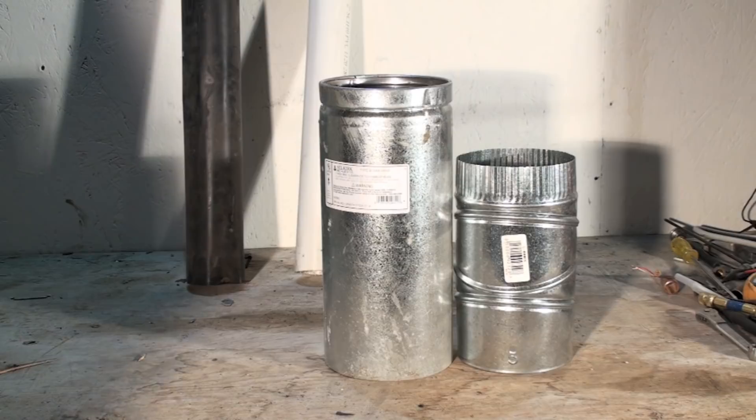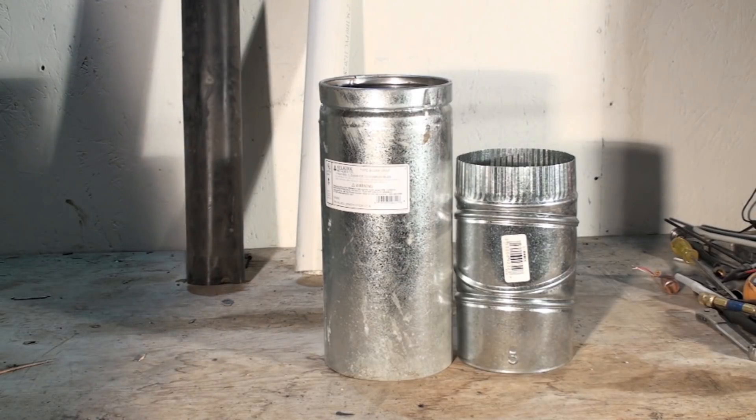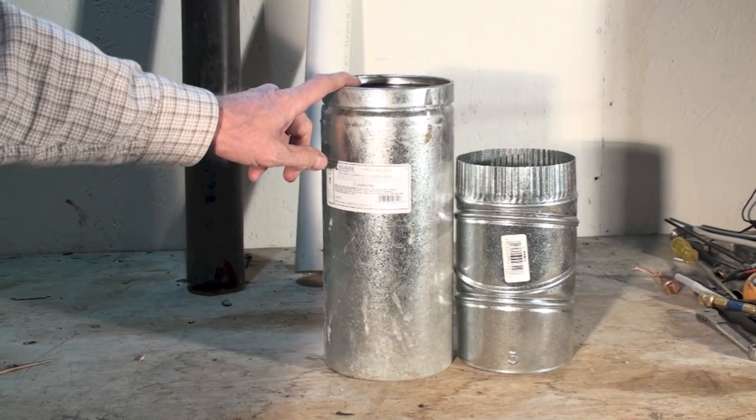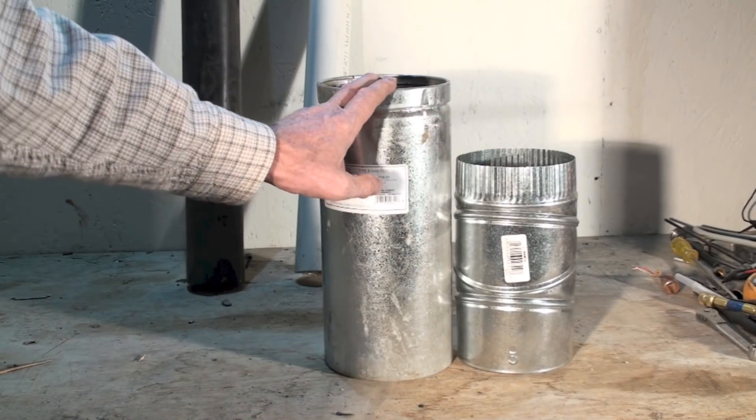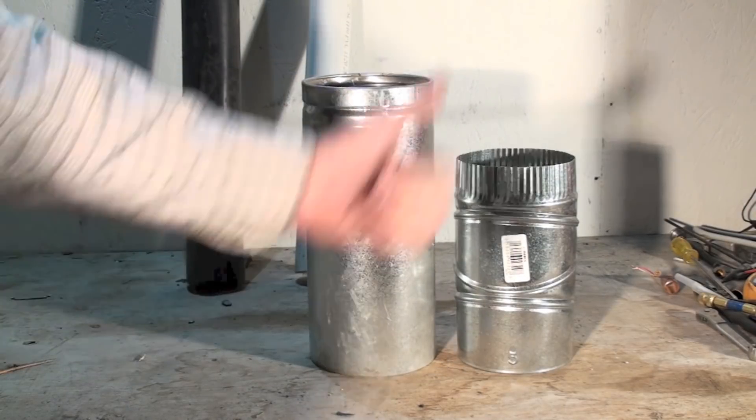When we started getting high efficiency furnaces, we changed from what we used to call the 80% furnace, which was kind of a steady state rating. That was the steady state supposed efficiency. We started going over to higher efficiency furnaces. The higher efficiency furnaces, we could still use B-Vent. And by the way, this vent all had to pitch upwards, minimum quarter inch per foot.